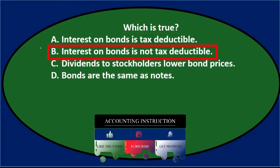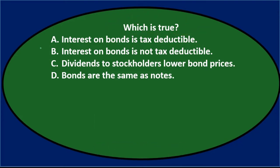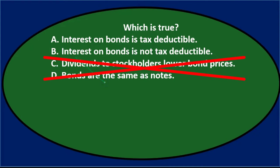Notice that options A and B are opposites — it's either taxable or non-taxable — so one of those has to be true, which covers all the options. If a multiple choice question does something like that, you can pretty much narrow it down to A or B.